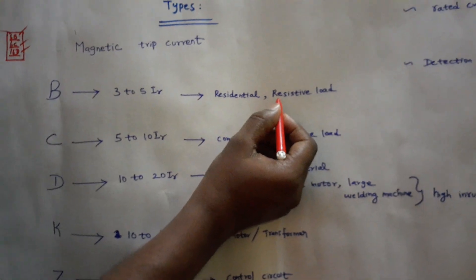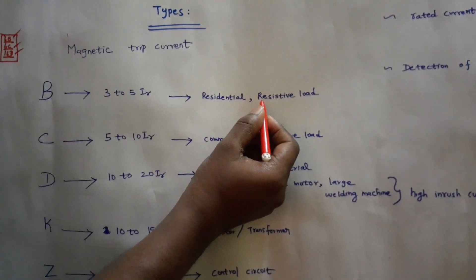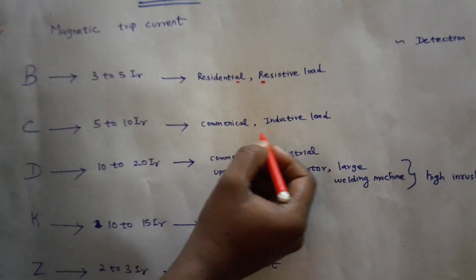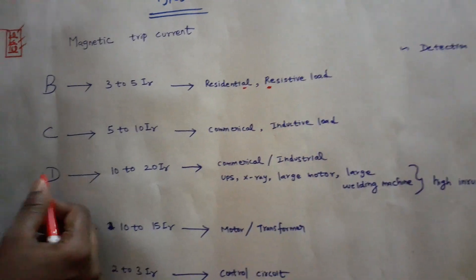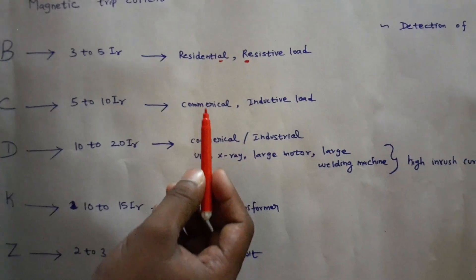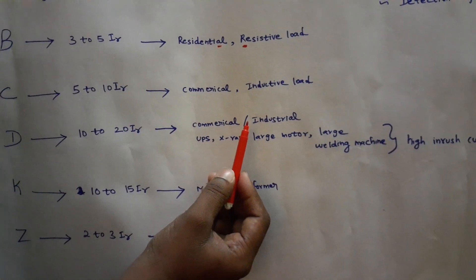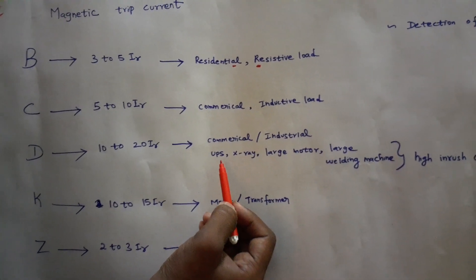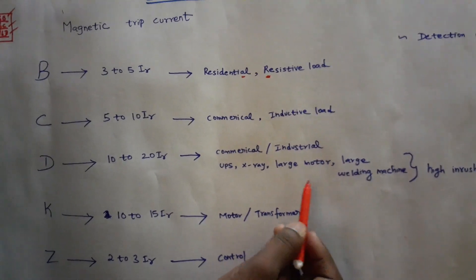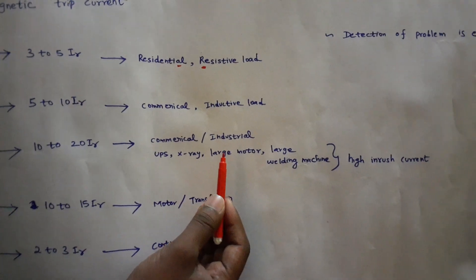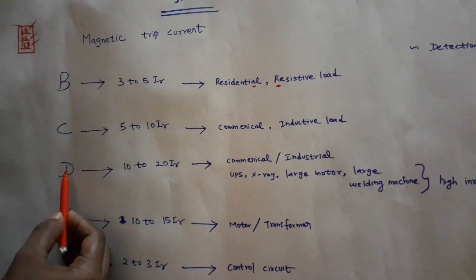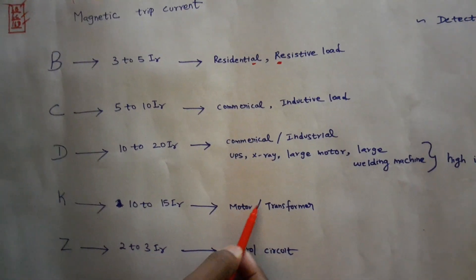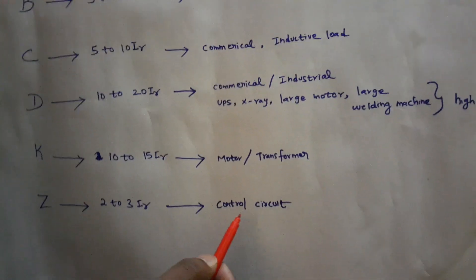B type breaker is used for resistive loads and residential applications. C type is used for commercial and inductive load applications. D type is used for commercial and industrial applications with high inrush current, such as UPS, X-ray machines, large motors, and large welding machines. K type is used for motor and transformer protection. Z type is used for control circuits.